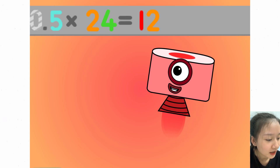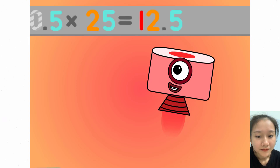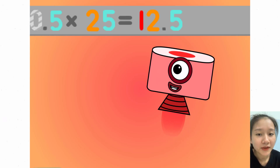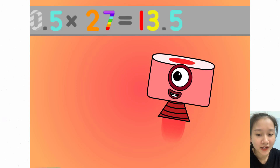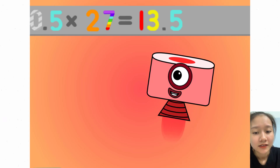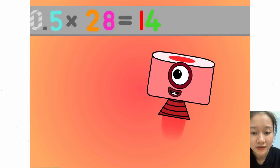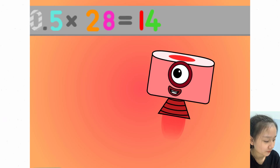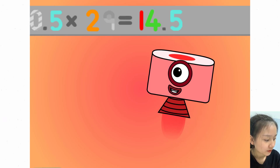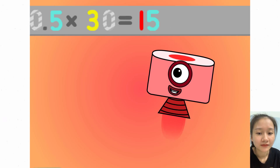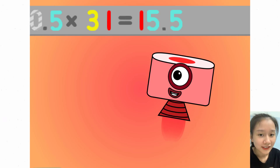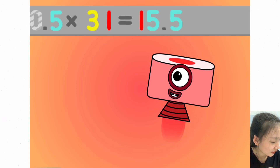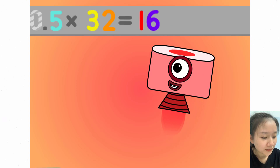0.5 times 24 equals 12. 0.5 times 25 equals 12.5. 0.5 times 26 equals 13. 0.5 times 27 equals 13.5. 0.5 times 28 equals 14. 0.5 times 29 equals 14.5. 0.5 times 30 equals 15. 0.5 times 31 equals 15.5. 0.5 times 32 equals 16.